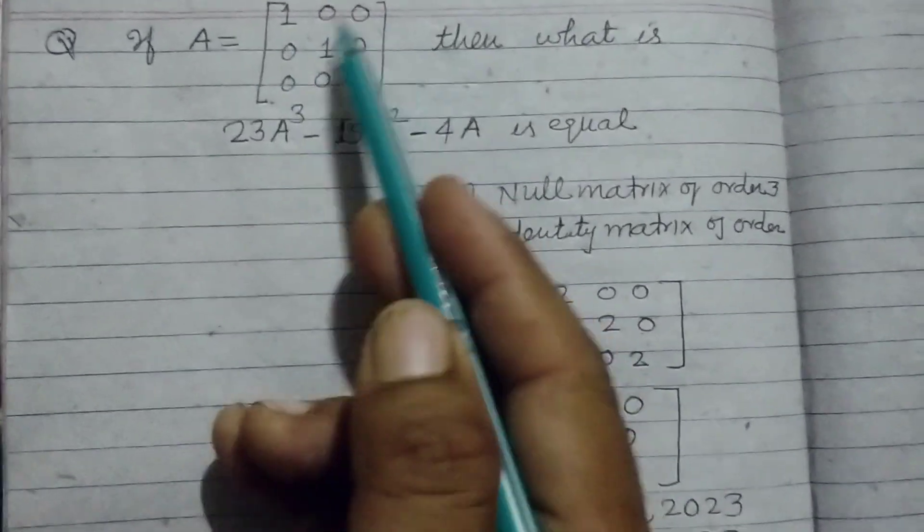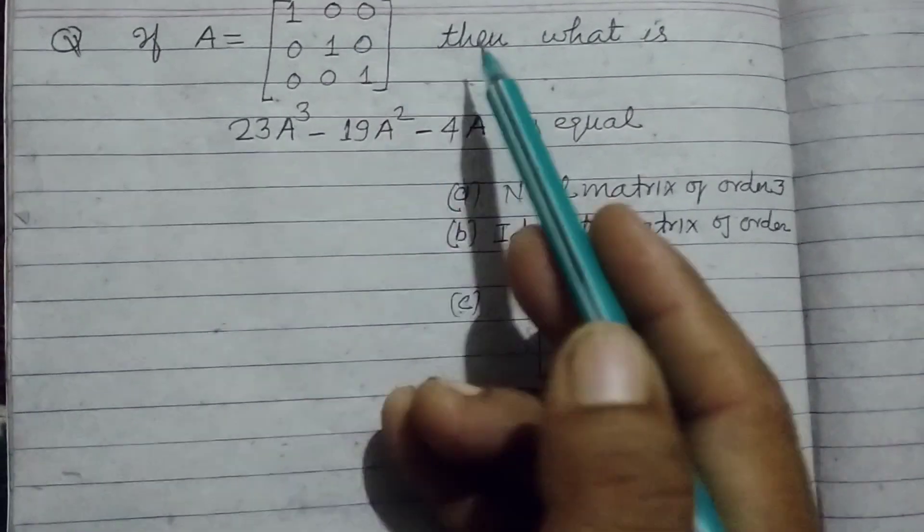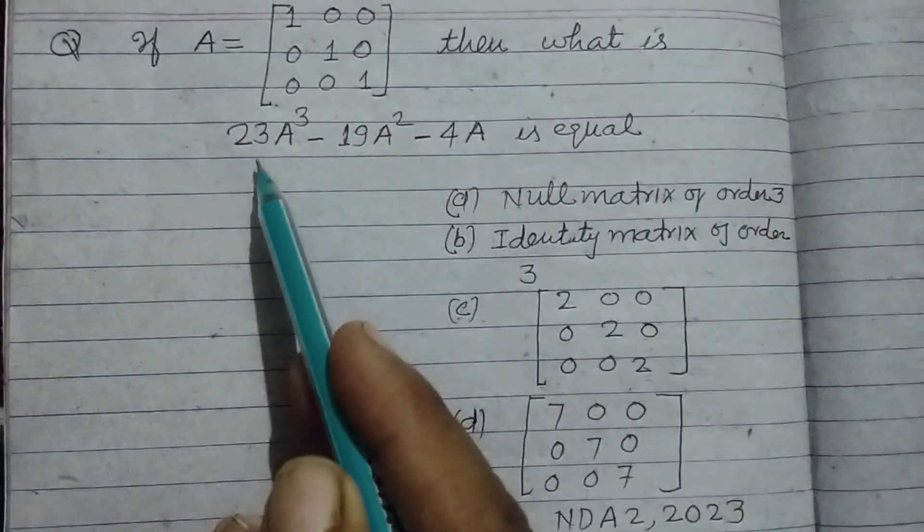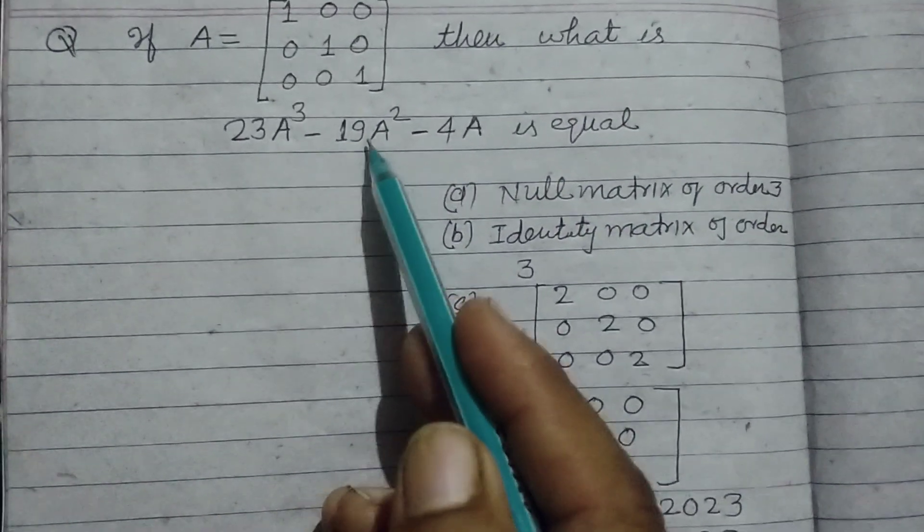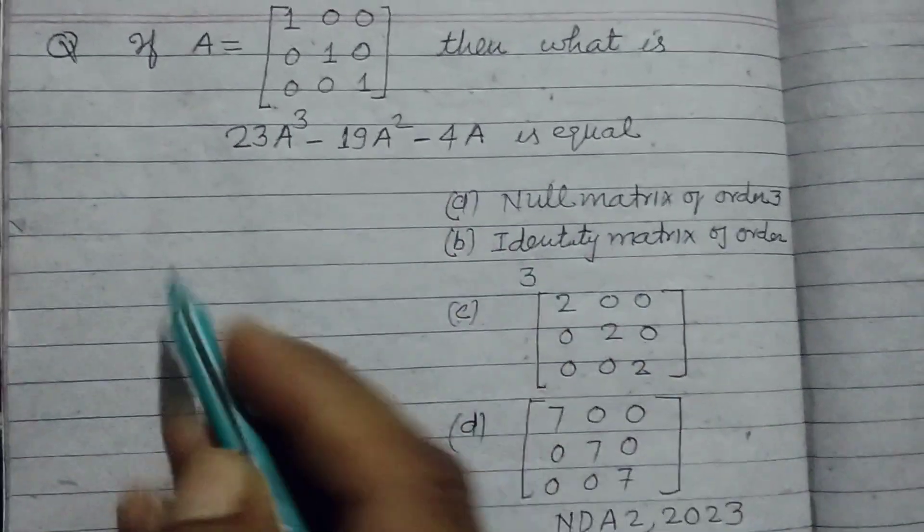If A equals the given matrix, this is identity matrix, then what is 23A³ minus 19A² minus 4A equal to?